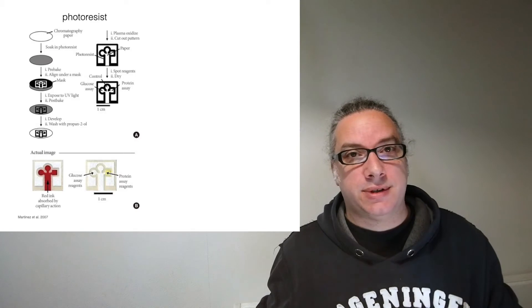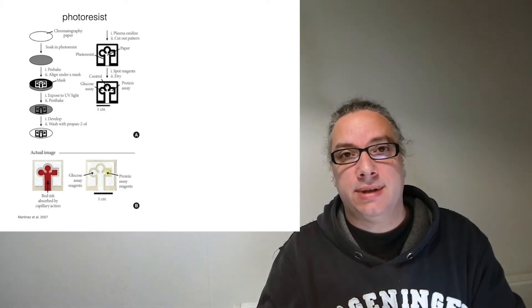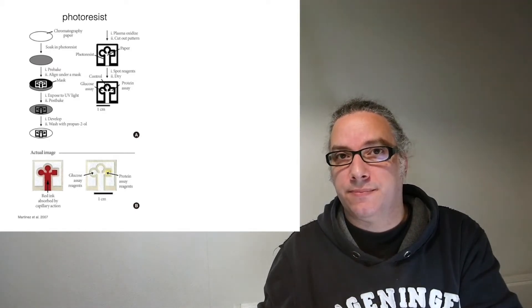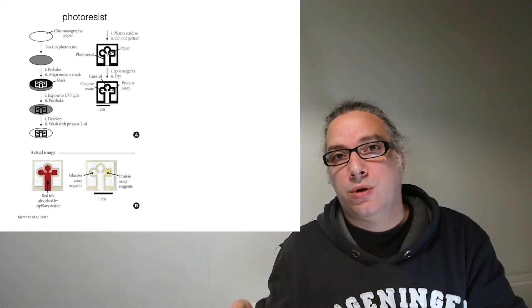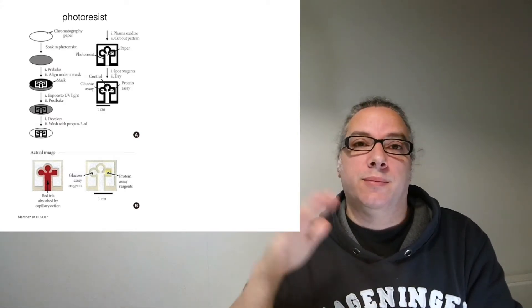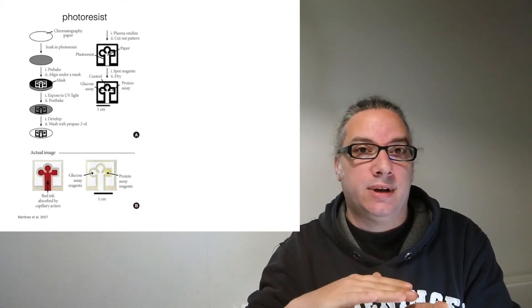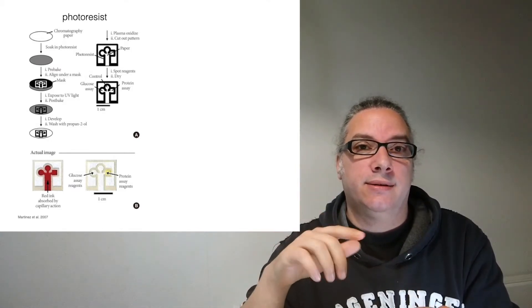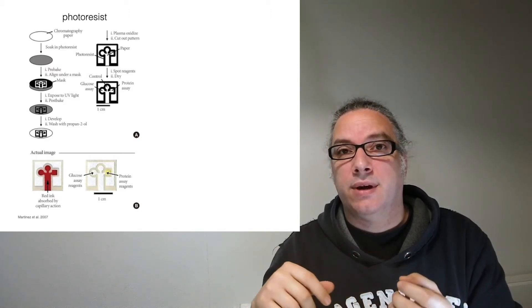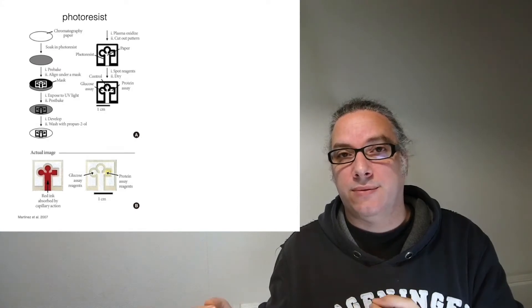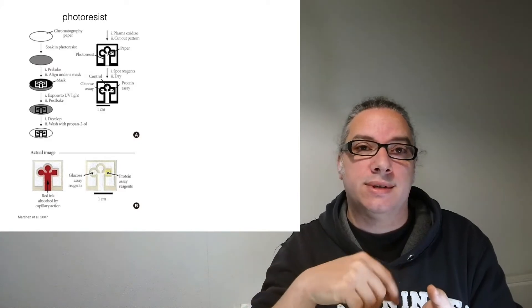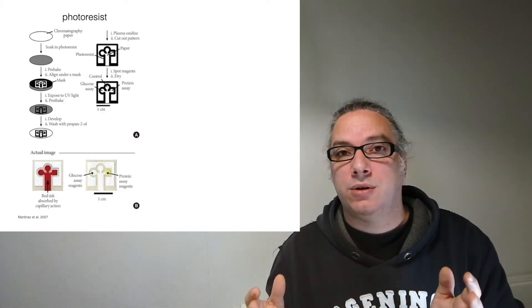Another way is to use a photoresist. So what is a photoresist? It's a polymer that will polymerize using UV light most of the time. So you soak your paper in photoresist. It's still liquid so it's still bendy. I put a mask on top. This mask is black and transparent then I shine light. The photoresist will cure only where the mask is transparent and then you wash away the liquid photoresist. So at this point your photoresist, the cured photoresist, is inside the paper and that's going to be your barrier.